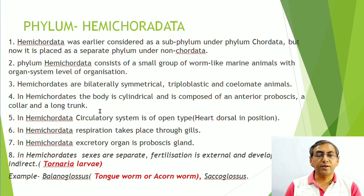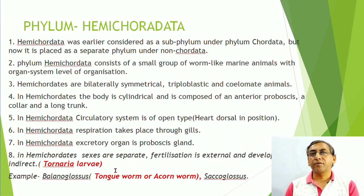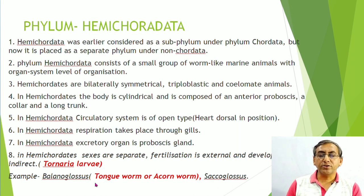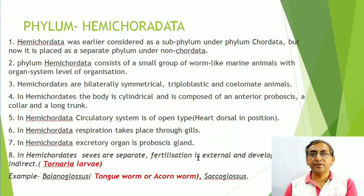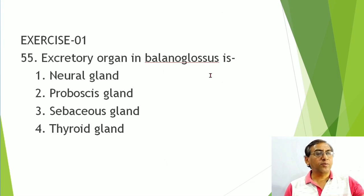Body of hemichordates is cylindrical, composed of three parts: anterior proboscis, middle collar, and posterior trunk (the longest part). Circulatory system is open type with a dorsal heart. Respiration occurs through gills. Excretion is by the proboscis gland. Sexes are separate, fertilization is external, development is indirect. The larva is the tornaria larva. True notochord is absent; the stomochord is part of the digestive system.